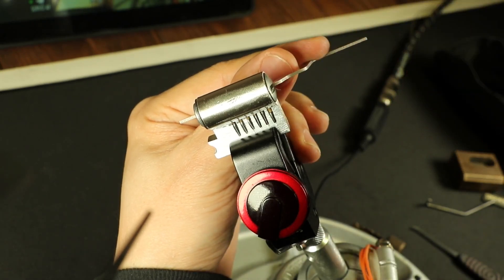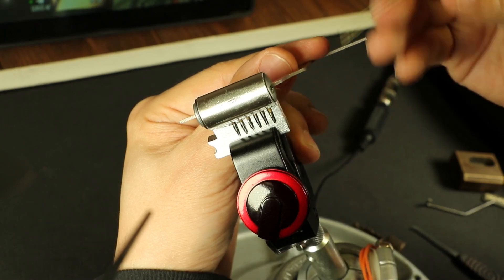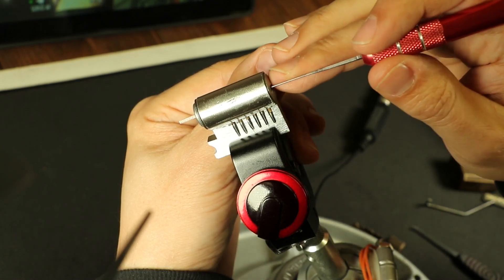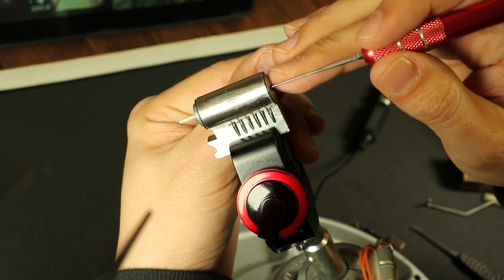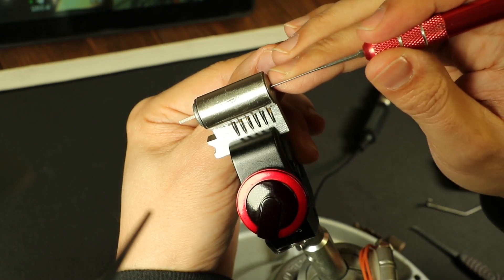You can look at my jiggle test video to understand the difference in pin states between binding, springy, and jiggling. So jiggling is a set pin. It can only move a little bit. If I were to move this further, I'd get an over-set.